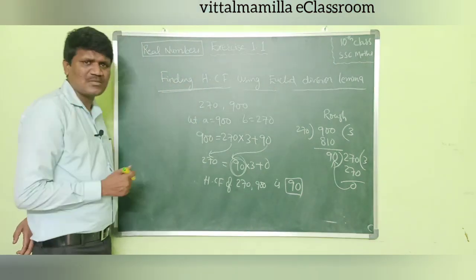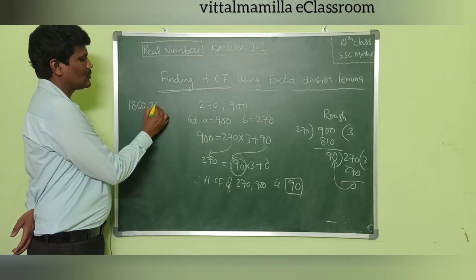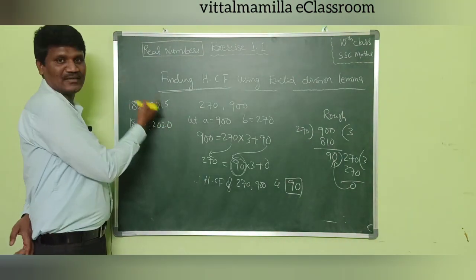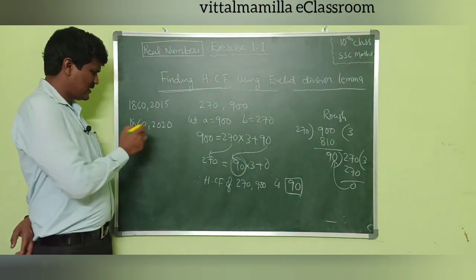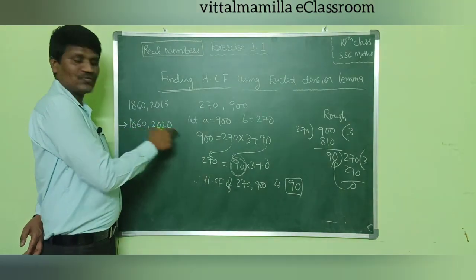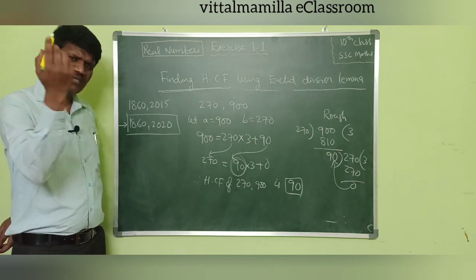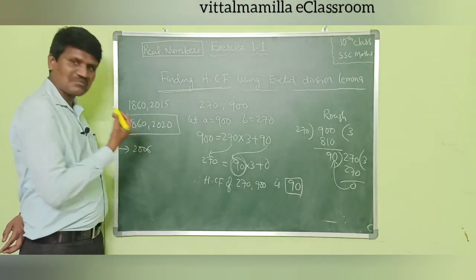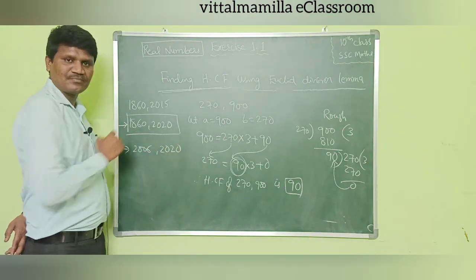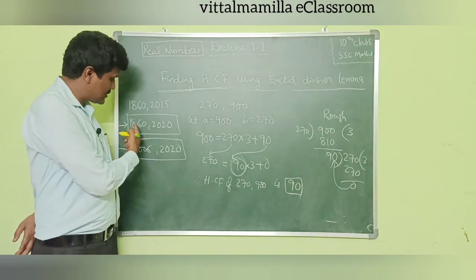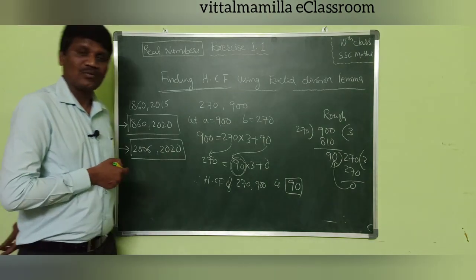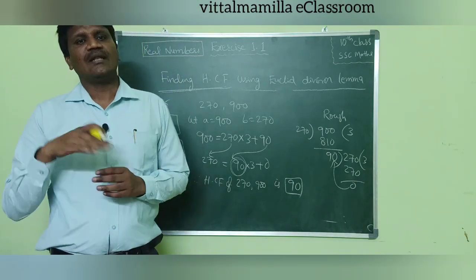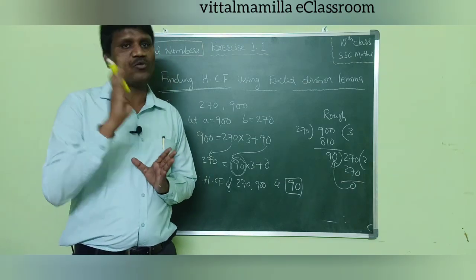Based on this, you can do more problems. In the textbook they have given 1860 and 2015 — you can change it to 2020. You can also take your date of birth, for example 2006 and 2020, and find the HCF of those two numbers using Euclid division lemma. In the next video, let us see the 4-mark problems related to Euclid division lemma.